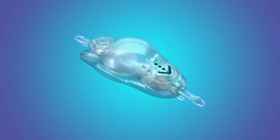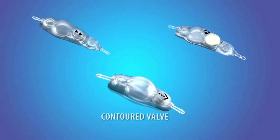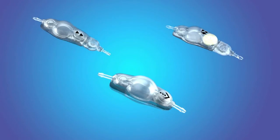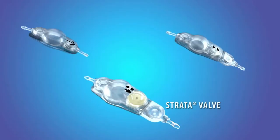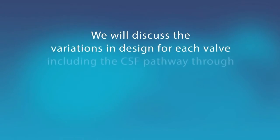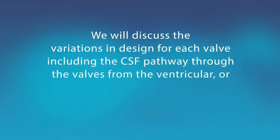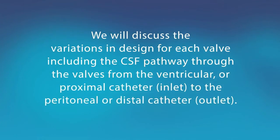In this video, we will cover the three types of Medtronic valves used for the treatment of hydrocephalus. The first commercial Medtronic valve was the contoured valve, now a part of the CSF flow control valve family. Subsequent to this was the delta valve with a siphon control device called the delta chamber, and most recently was the strata valve with adjustable pressure capabilities. We will discuss the variations in design for each valve, including the CSF pathway through the valves from the ventricular or proximal catheter inlet to the peritoneal or distal catheter outlet.